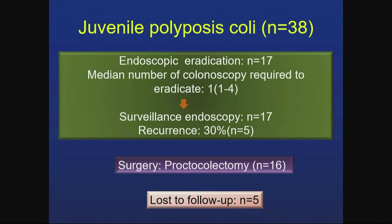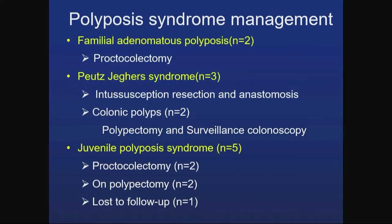The major group, juvenile polyposis coli, had 17 patients started on endoscopic therapy. Eradication was achieved in one to four sessions, but there was a 30% recurrence in follow-up. 16 patients underwent proctocolectomy while 5 were lost to follow-up. Two FAP patients underwent proctocolectomy. Three Peutz-Jeghers syndrome patients presented with intussusception requiring resection and anastomosis, and two also had additional colonic polyps for which polypectomy was done.